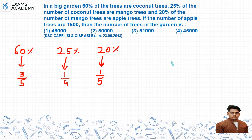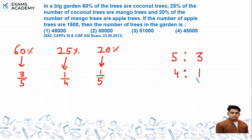Using the ratio method: out of 5 total trees, 3 are coconut trees. For coconut to mango, 25% gives a ratio of 4:1. For mango to apple, 20% gives a ratio of 5:1.